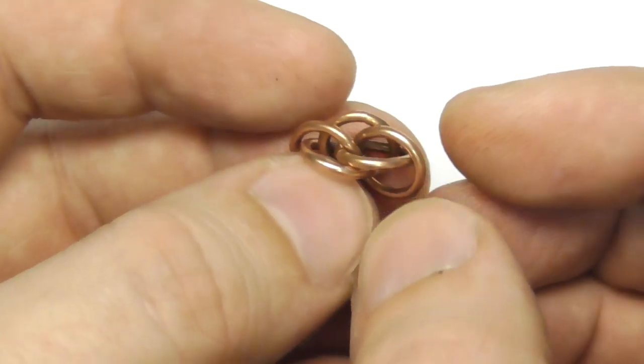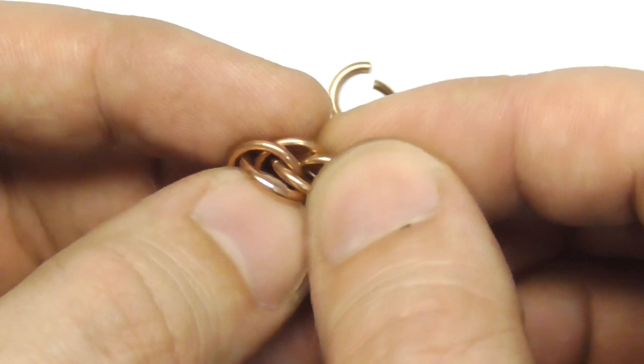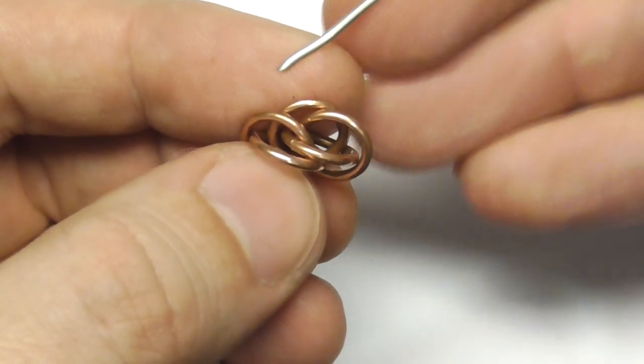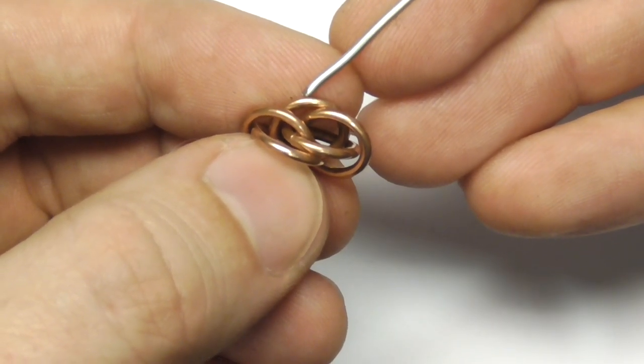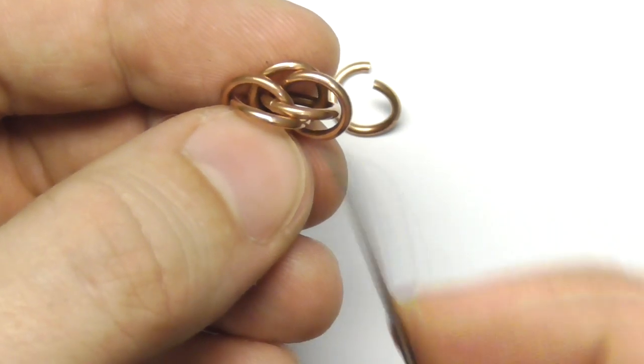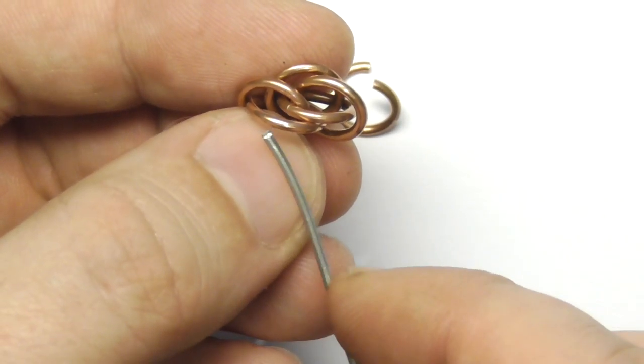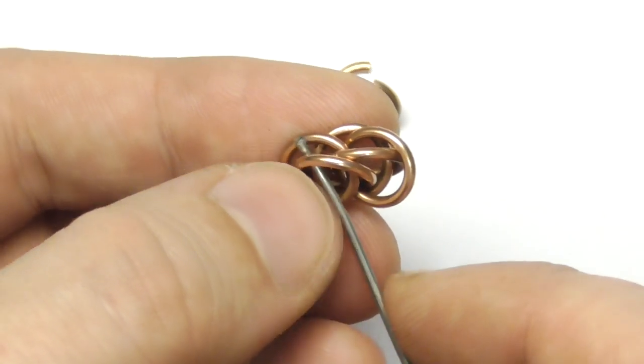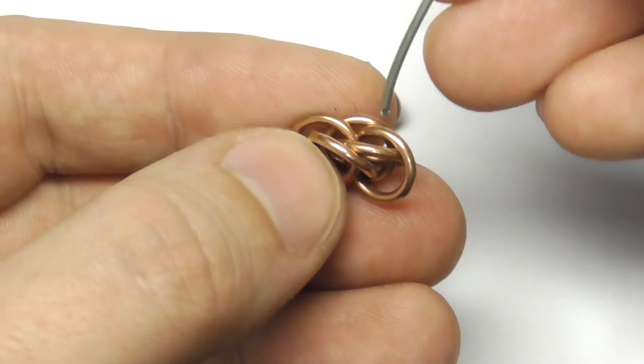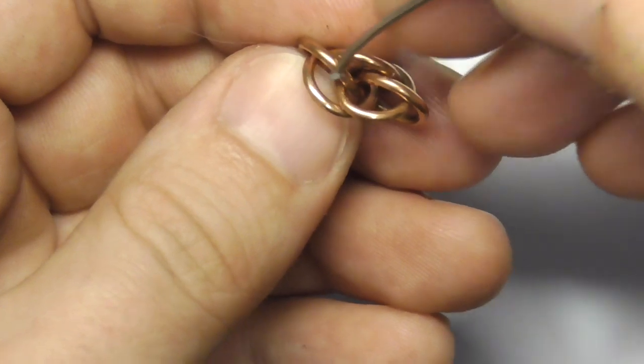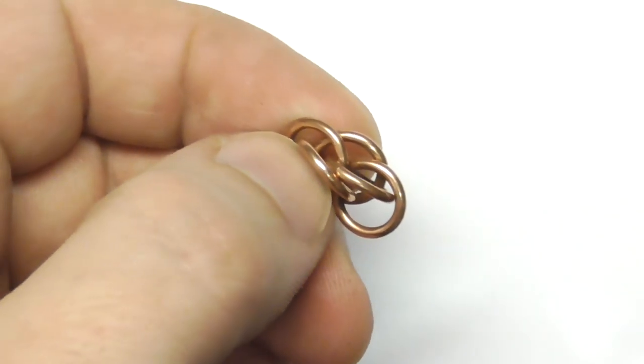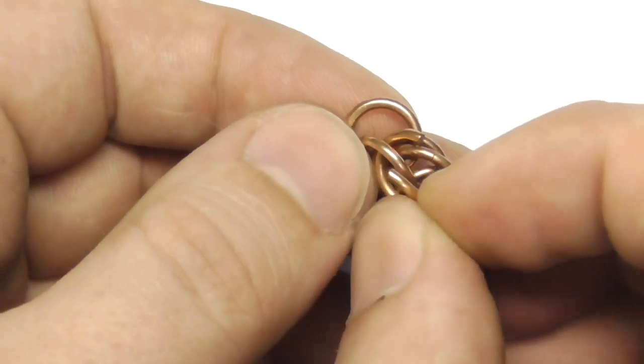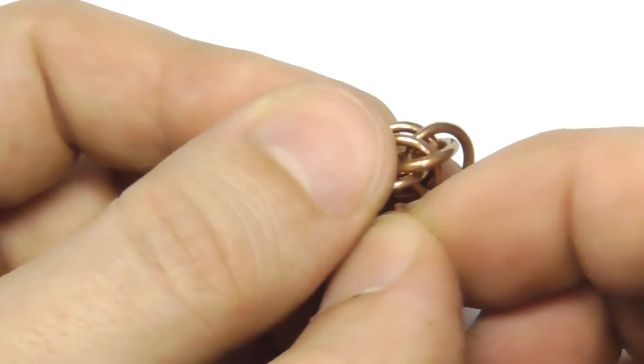And now we have to add another ring. This is the ring. This is the ring that I have added at the last step. And the new ring will go here, through this ring and also through this one. So it will go here and here.